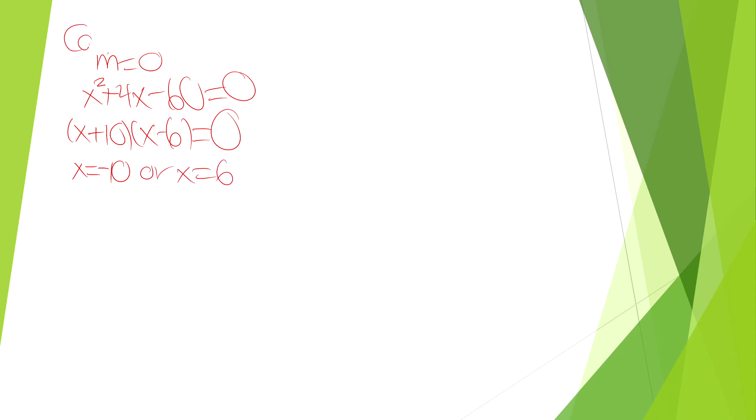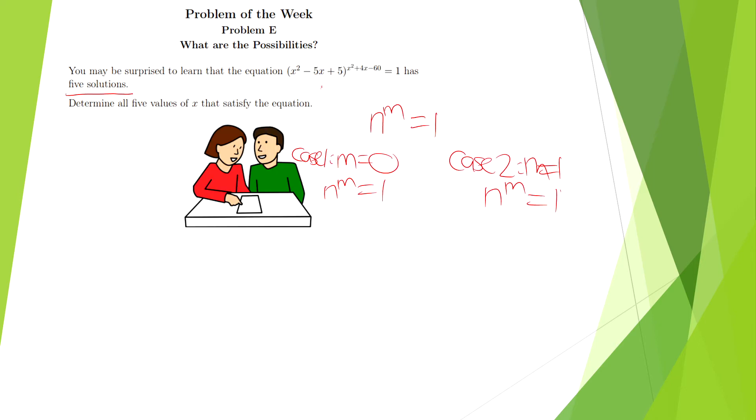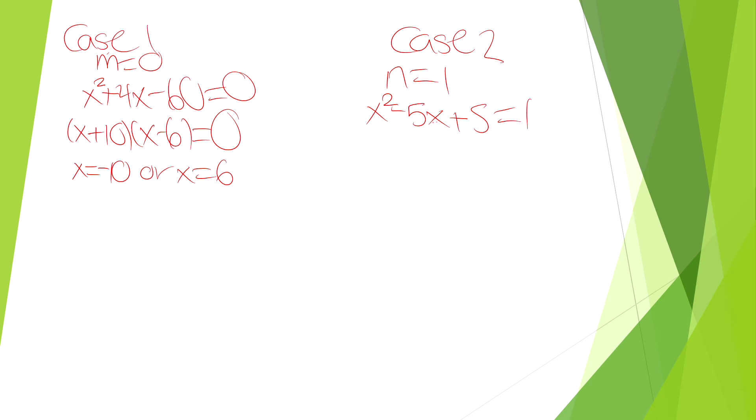Now we consider the second case, where n is equal to 1. So then we set the quadratic equation x² - 5x + 5 equal to 1. Let's just double check this is the correct quadratic. Yes, it is. So then we can move 1 to the left side and do the factoring for this equation as well.